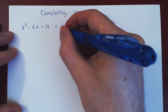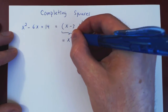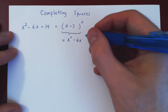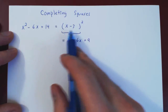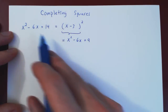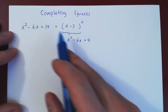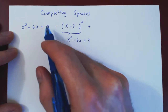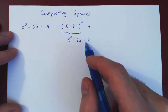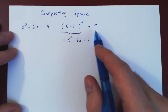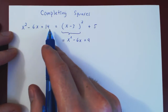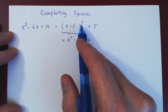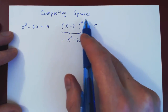If you square x minus 3, you get x squared minus 3x minus 3x, so minus 6x, and negative 3 times negative 3 gives plus 9. So this term gives you the first two terms exactly — the quadratic term and the linear term — and we're off by a constant. What do we add to x minus 3 squared to get a positive 14 constant? We add plus 5. This is the completion of the squares for x squared minus 6x plus 14. We have eliminated the linear factor; all we have is something squared plus a constant.